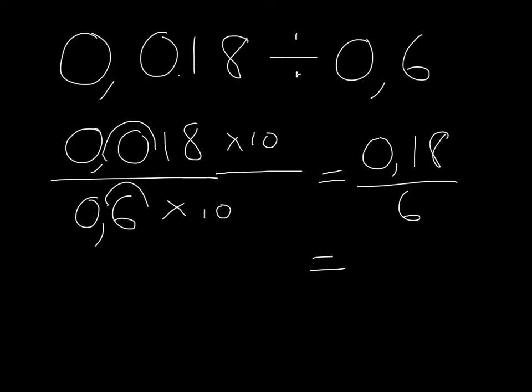And if I take 6 and divide it into 0,18, 6 goes into 0, no times, 6 goes into 1, no times, remainder 1, 6 goes into 18, 3 times, and I get my answer of 0,03.